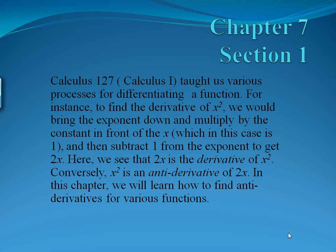Chapter 7, Section 1. In Calculus 1, we are taught various processes for differentiation. For instance, to find the derivative of x squared, we bring the exponent of 2 down and multiply by the constant in front of x, which is 1, and subtract 1 from the exponent to get 2x. So 2x is the derivative of x squared. Conversely, x squared is what we call an antiderivative of 2x. In this chapter, we'll learn how to find antiderivatives for various functions.